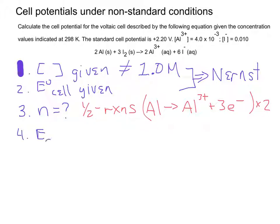the Nernst equation where the cell potential equals the standard cell potential minus 0.0592 volts over N times the log of Q.